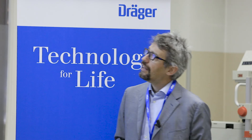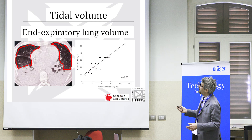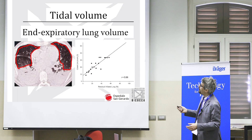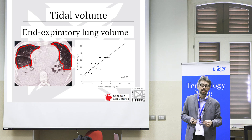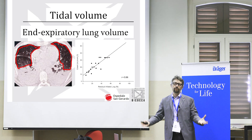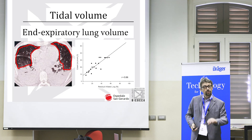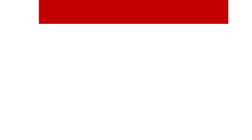It is a little tricky to measure end expiratory lung volume at the bedside, but we know from early studies by Gattinoni and Pesenti that compliance is a great surrogate: the larger the lung, the higher the compliance. So instead of measuring end expiratory lung volume, we measure compliance. And if you do a bit of math, compliance is tidal volume divided by plateau minus PEEP — which leaves you with driving pressure.